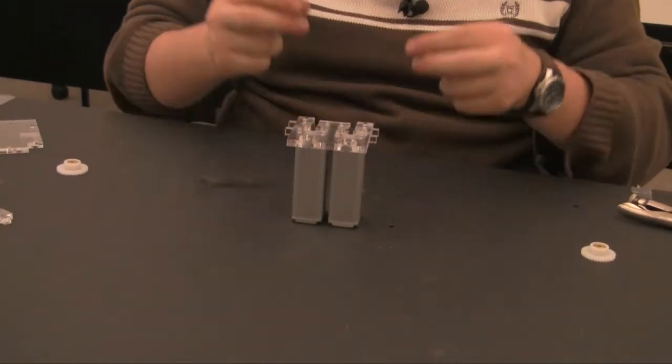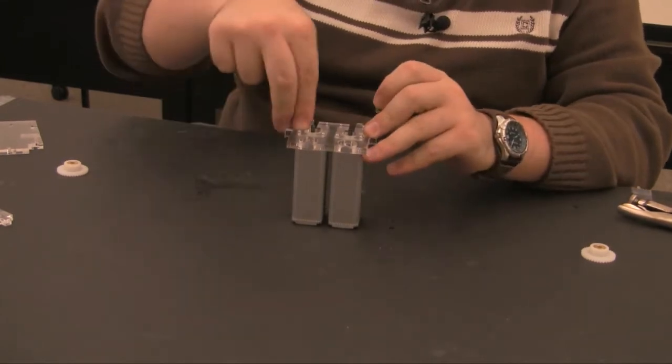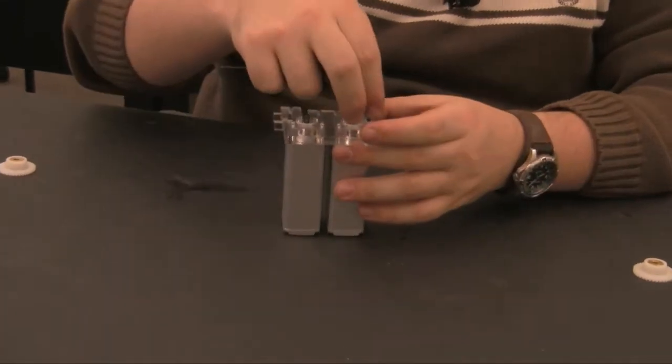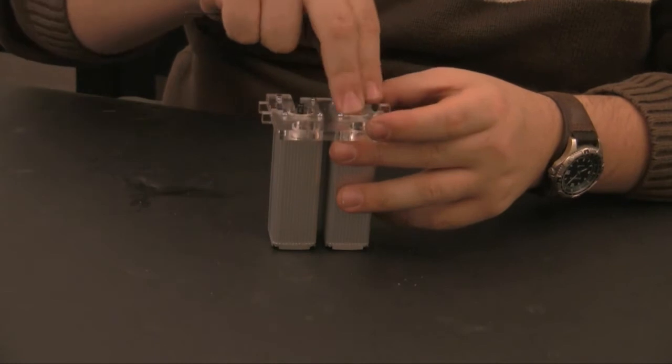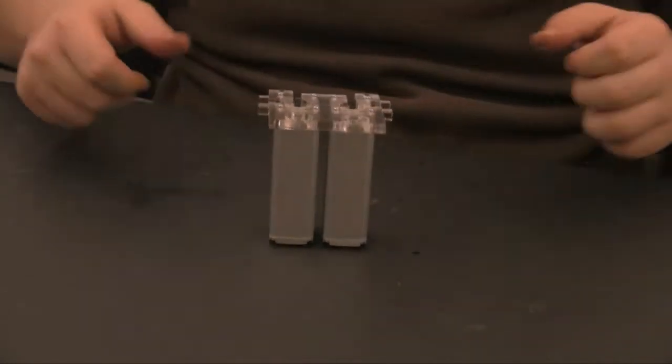Now that the motors are secure, take two square nuts and place them into the T-slots on either side of the motor. These will be used later.